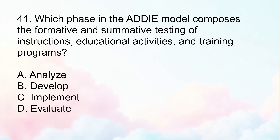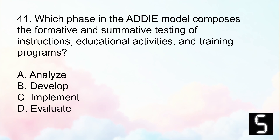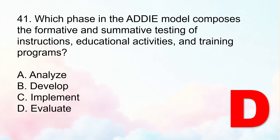Number 41: Which phase in the ADDIE model encompasses the formative and summative testing of instructions, educational activities, and training programs? Letter A, analyze. Letter B, develop. Letter C, implement. Letter D, evaluate. The correct answer is Letter D, evaluate. In the evaluate phase of ADDIE, both formative and summative assessments are conducted to determine the effectiveness and impact of instruction, including testing and revising instruction based on feedback. Analyze covers needs assessment and goal definition; develop is about creating materials; and implement is delivering the instruction to learners.